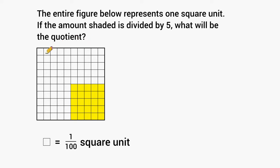So the problem is saying that this entire figure right here is one whole square unit. That just means that it is a square with a width of 1 and a length of 1. So if we multiplied this side by this side, it would give us an area of one whole square unit.